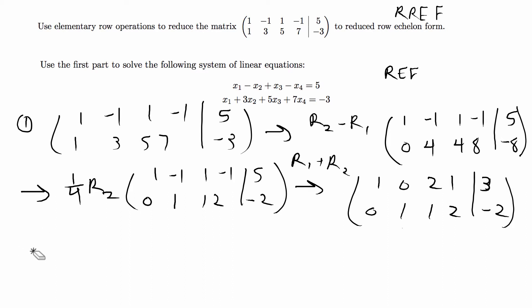We're done with the first part, and as you can see the first part helps us solve the system of linear equations in the second part because if you look at the augmented matrix, it is the augmented matrix for this system. If you look at the coefficients 1, -1, 1, -1, that's the first row equal to 5, and then for the second row it's the same thing.